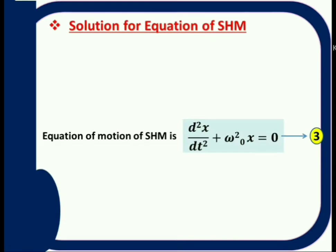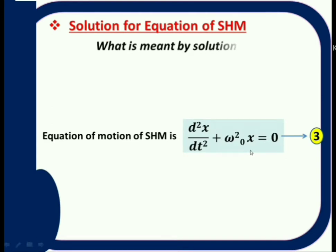Next, the solution for simple harmonic motion. The equation of motion is d²x/dt² + ω₀²x = 0. This describes a body executing simple harmonic motion. The question is: if this is the equation, then what is the solution?